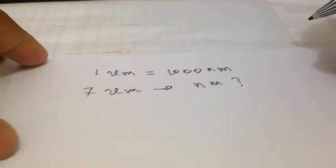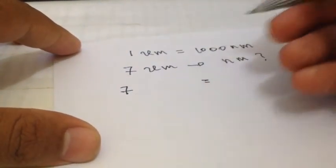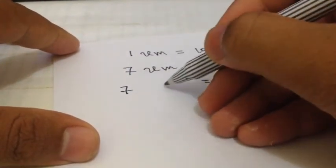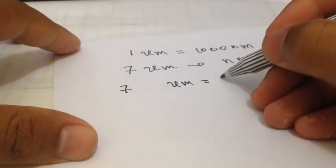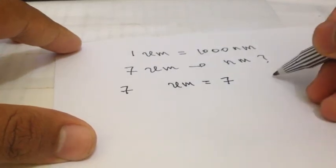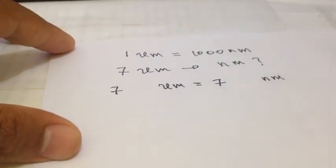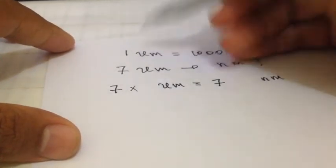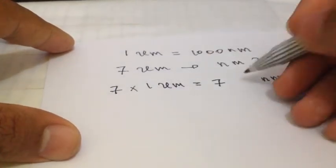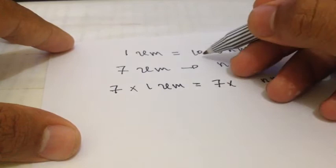The first thing that I need to do is we need to put seven, right, seven micrometers. And here we put also seven nanometers, but we need to multiply seven with one and then we need to multiply seven here with one thousand.